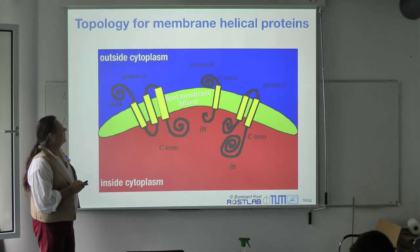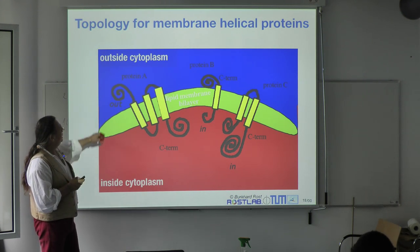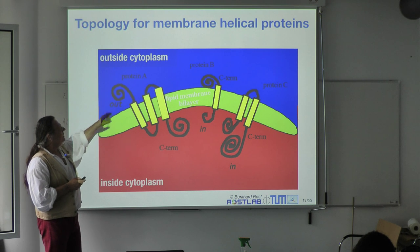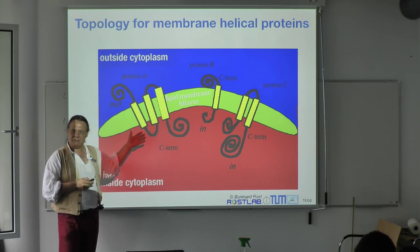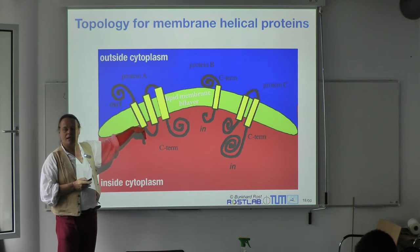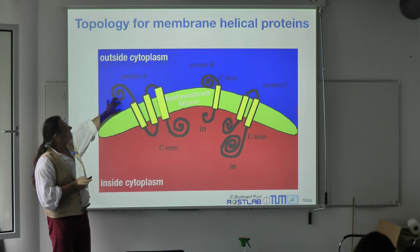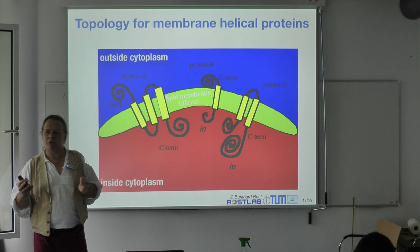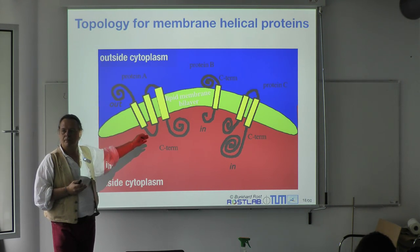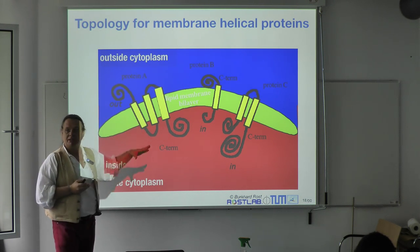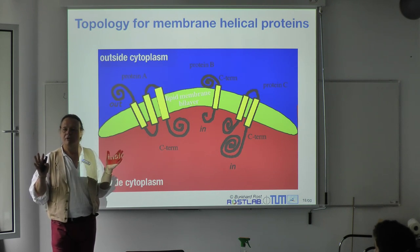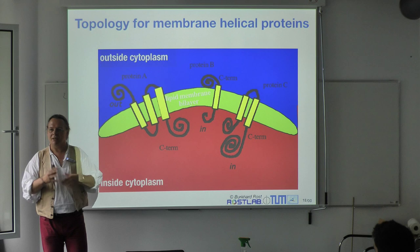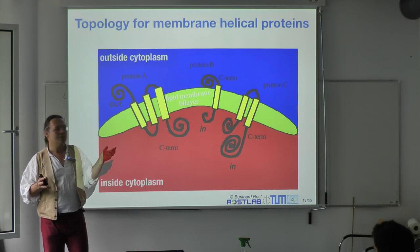The prediction task for a membrane protein is, given a sequence, to predict where the membrane helix is — and another aspect is how many helices you have and how they are oriented with respect to the inside and outside of the cell. The number of membrane helices and the orientation tells you a lot about the function of a protein. This is not the case for globular proteins, which don't have an inside/outside orientation.